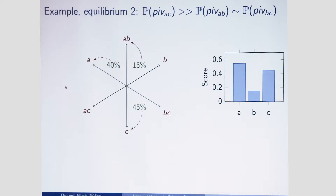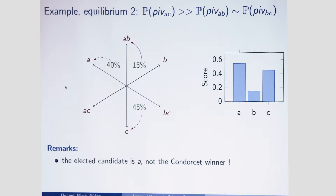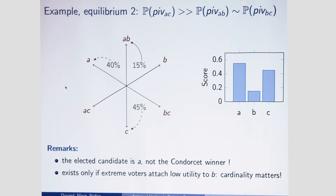There is a second equilibrium in this example with different features. Here the main pivot is AC and the other pivots are of comparable magnitude. In this equilibrium the elected candidate is not the Condorcet winner, so we do not always have Condorcet consistency. Moreover, the strategies of two types depend on their cardinal utilities, related to the fact that two events are of similar magnitude.